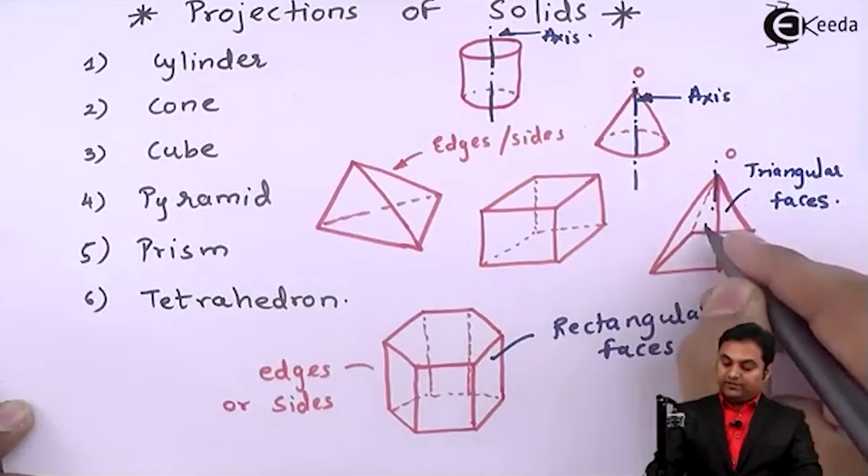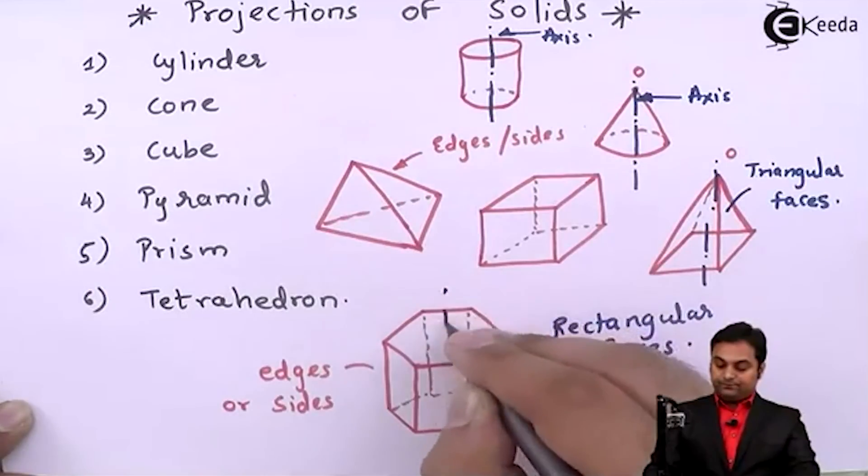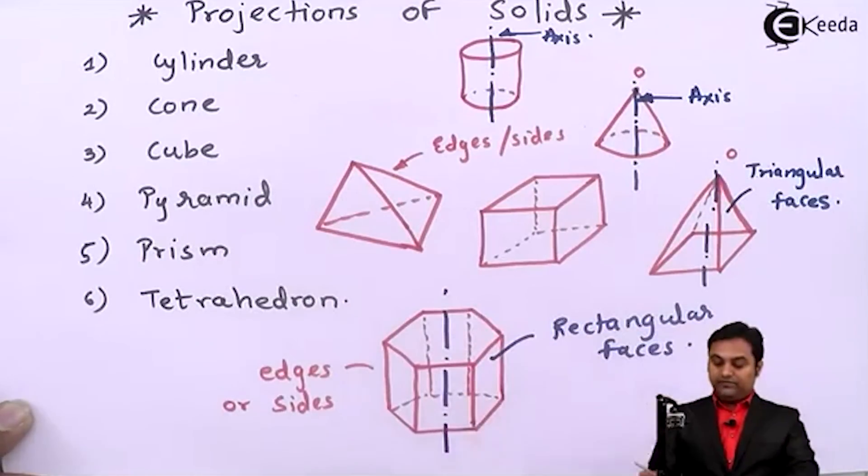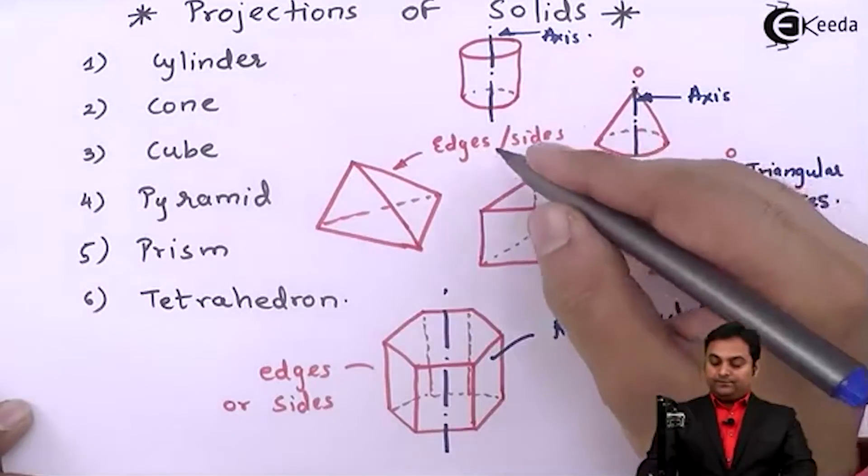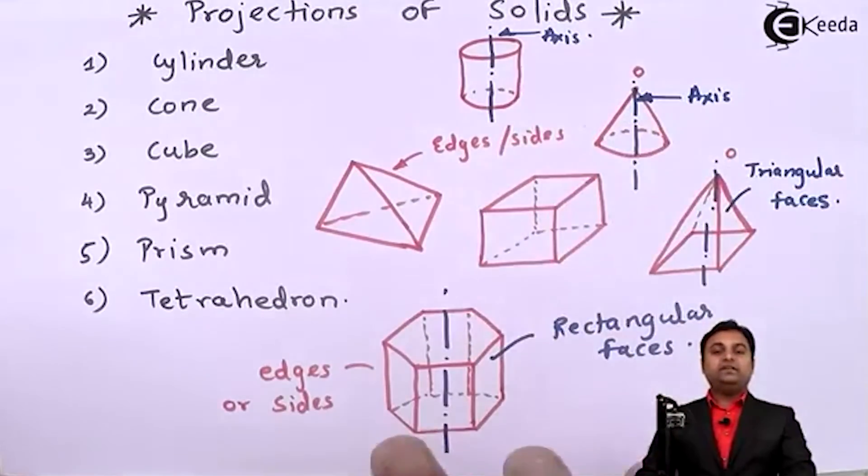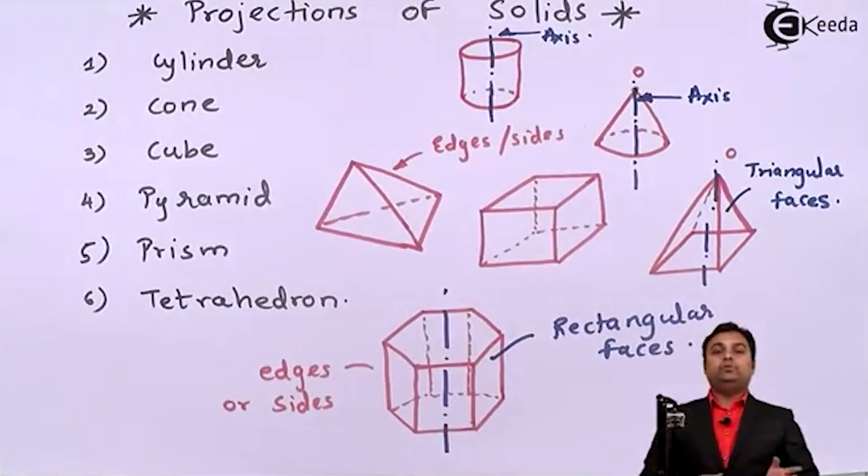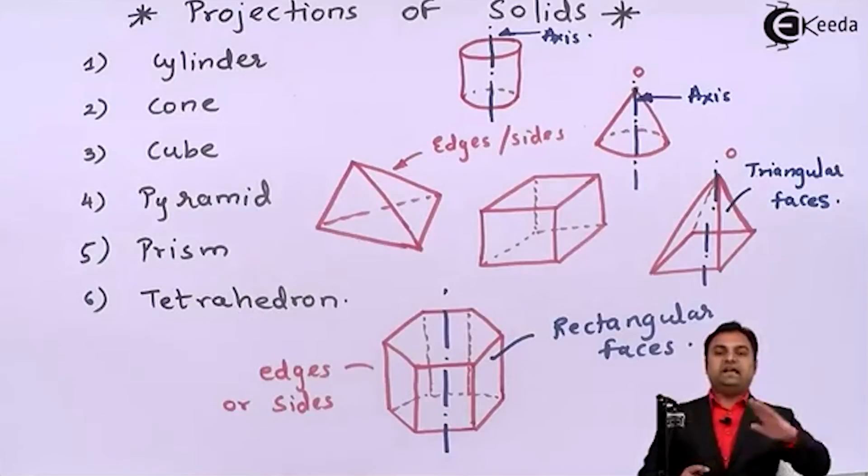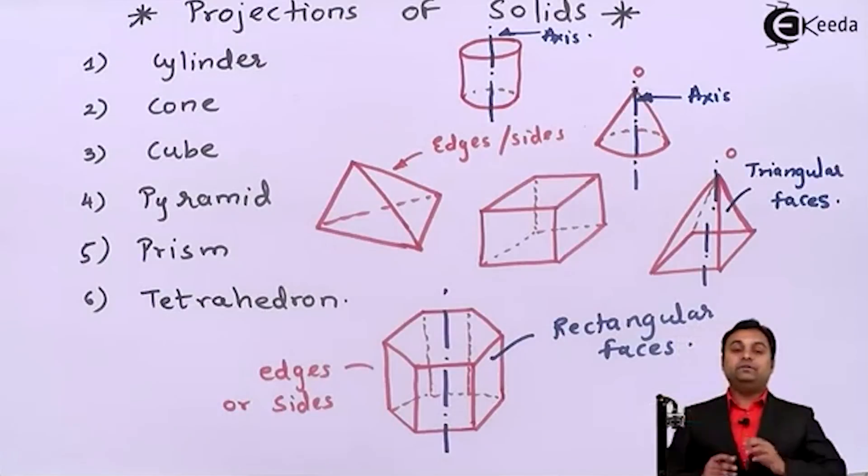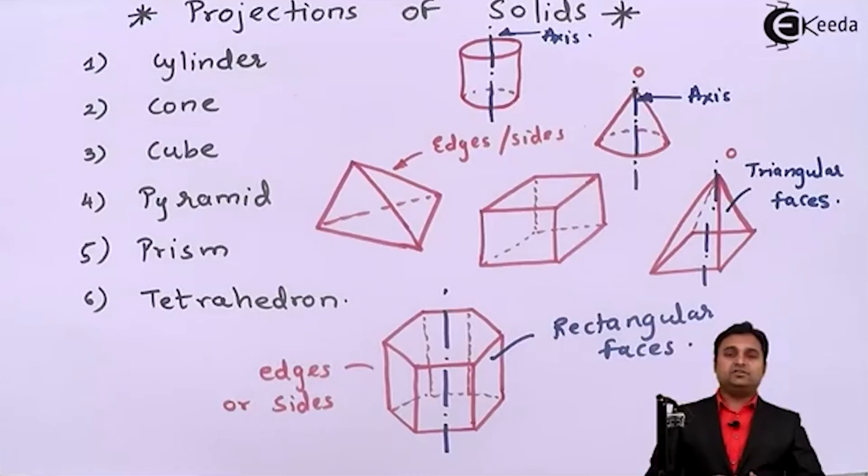Even in case of pyramids here I can draw the axis. Even in case of prism. So here we can say that either the solid will be tilted about its axis or it can be tilted about its base edge or any of the given conditions.